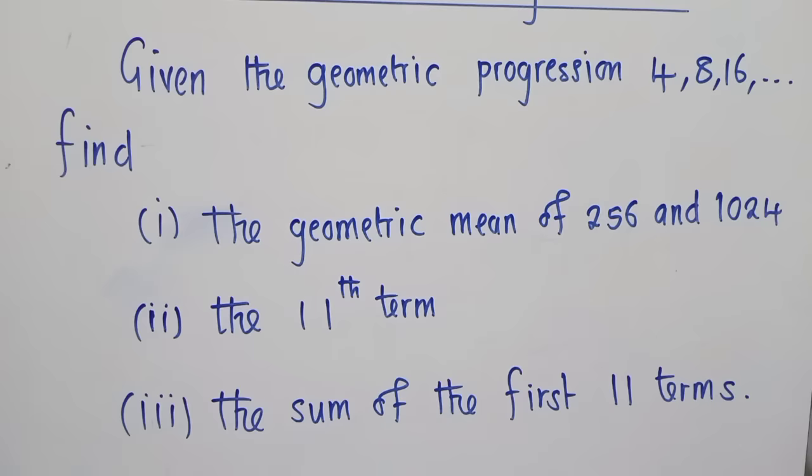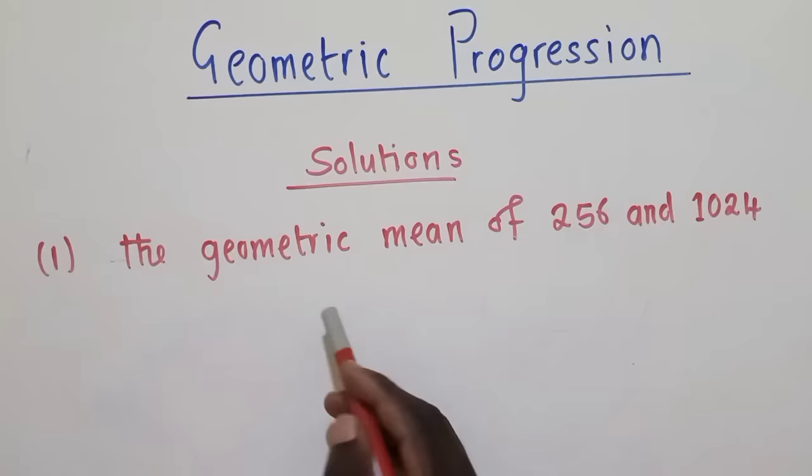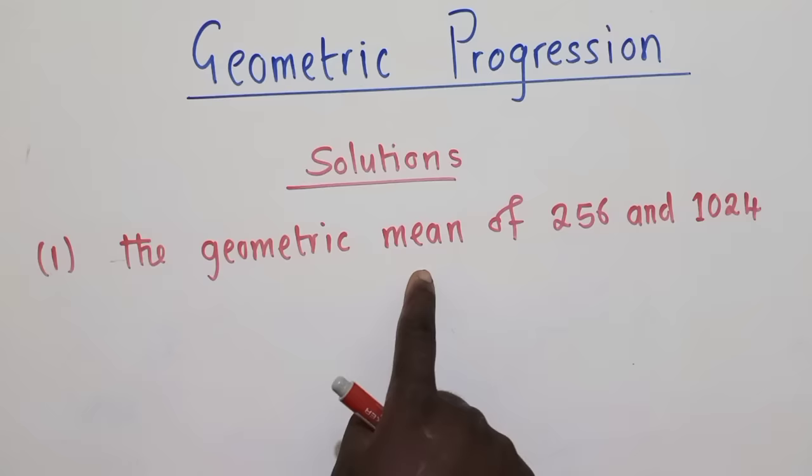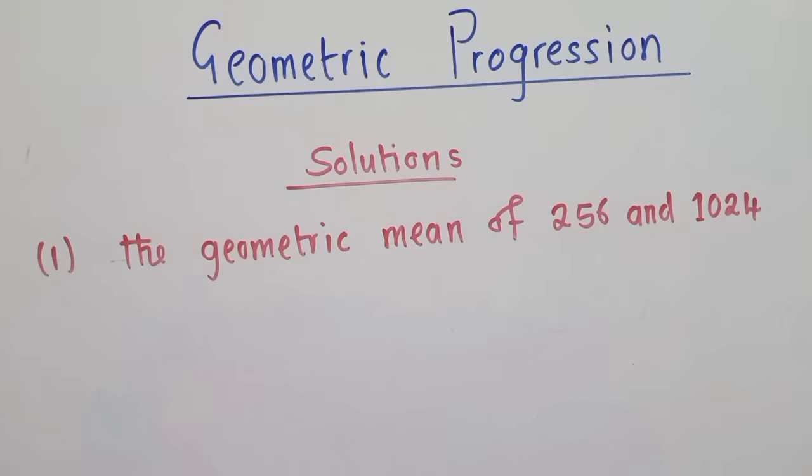To find the geometric mean of 256 and 1024, all you need to understand is that geometric mean simply means get these two numbers, multiply them and find their square root. So we multiply them: 256 times 1024.